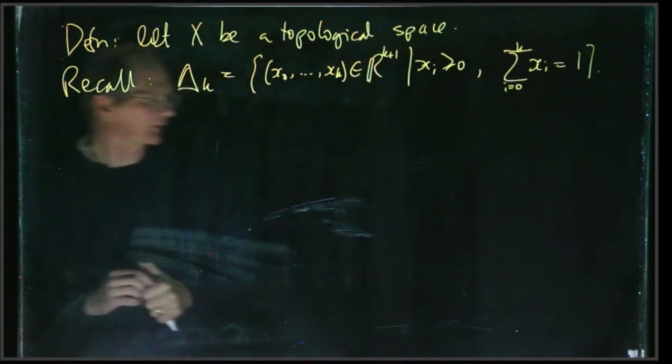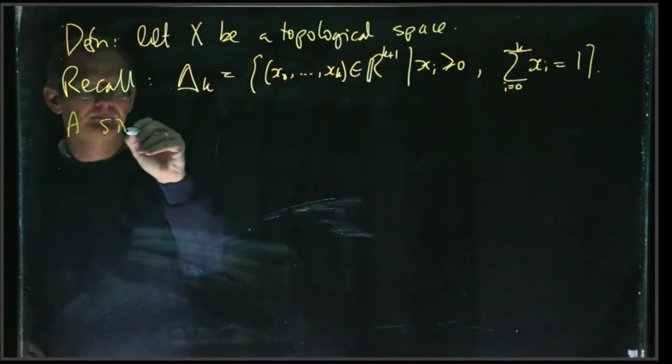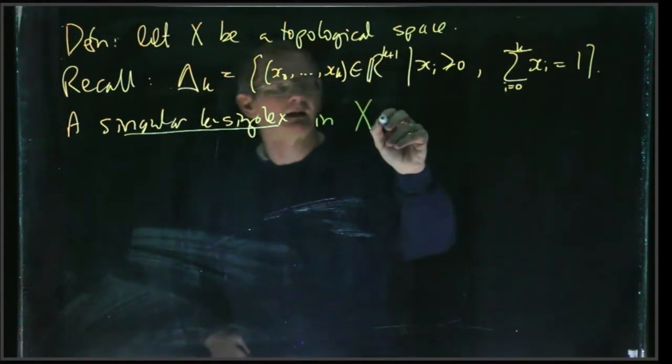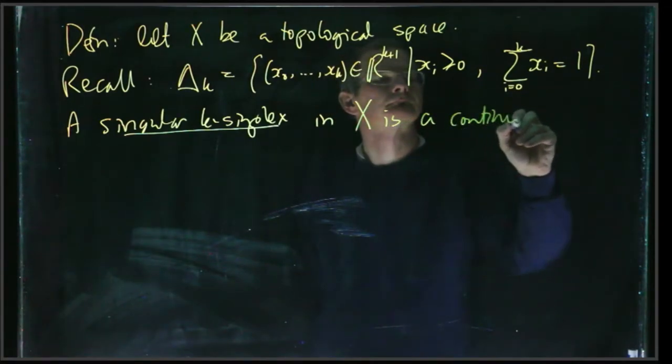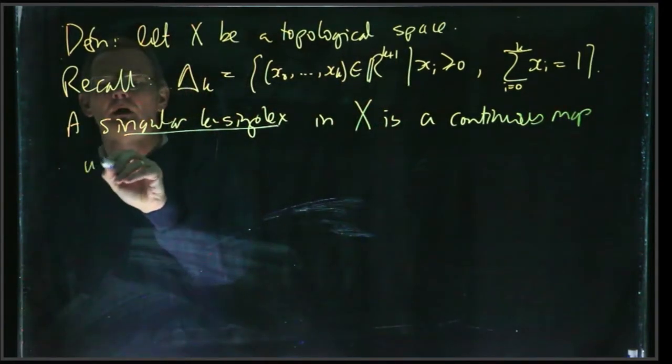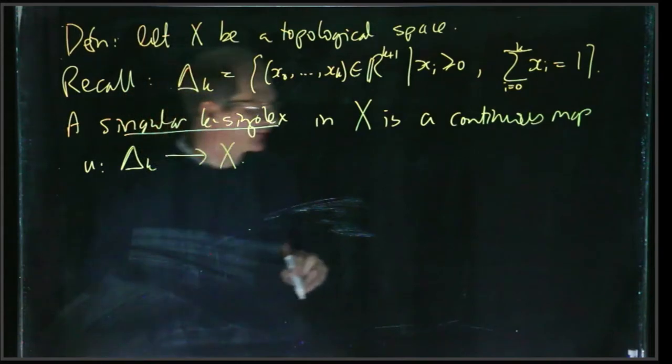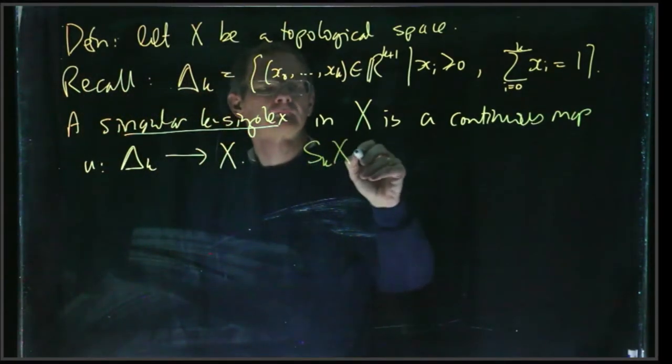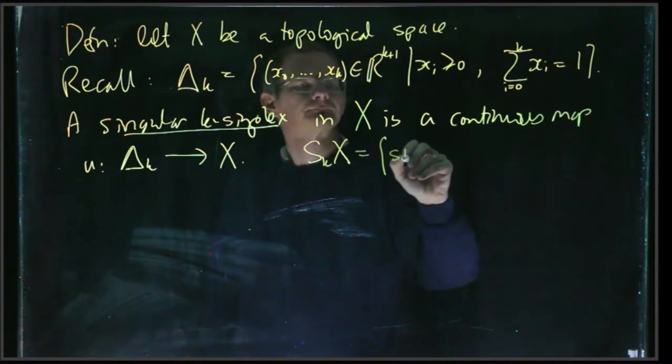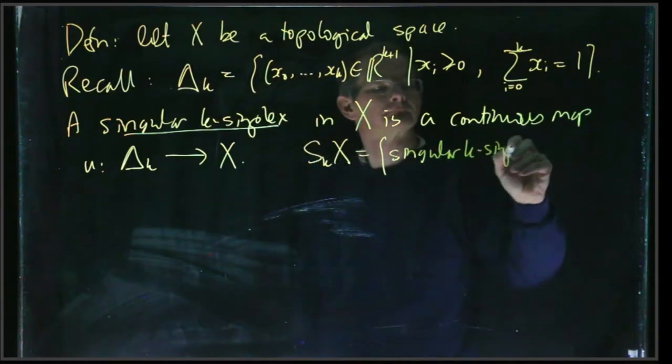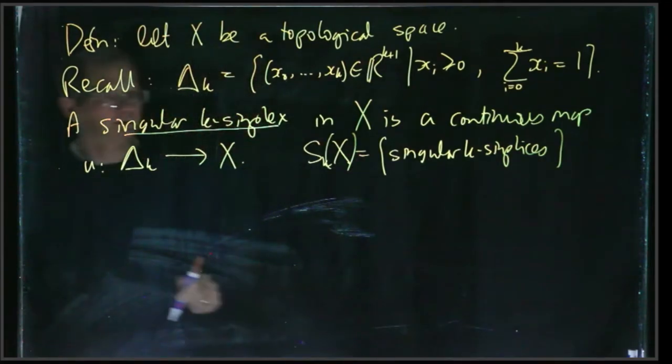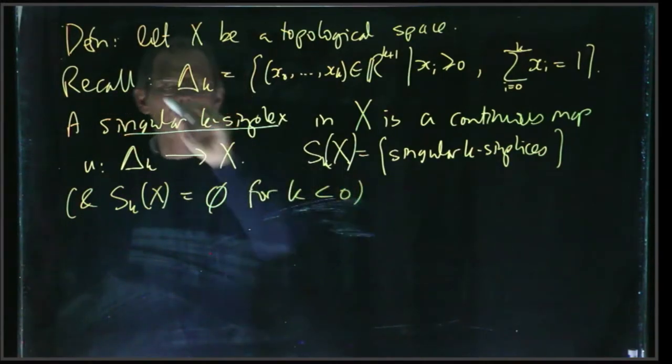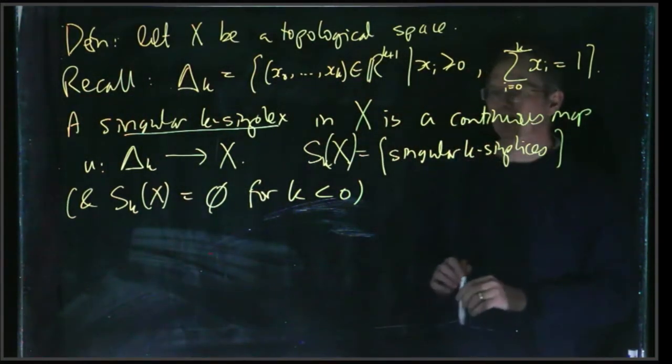And so that was our basic k-simplex we discussed before, and a singular k-simplex in X is just a continuous map, let's say u, from this k-simplex into X. And we write Sₖ(X) as just the set of singular k-simplexes. So Δₖ is only defined when k is non-negative; it's convenient to define Sₖ(X) to be empty when k is negative.